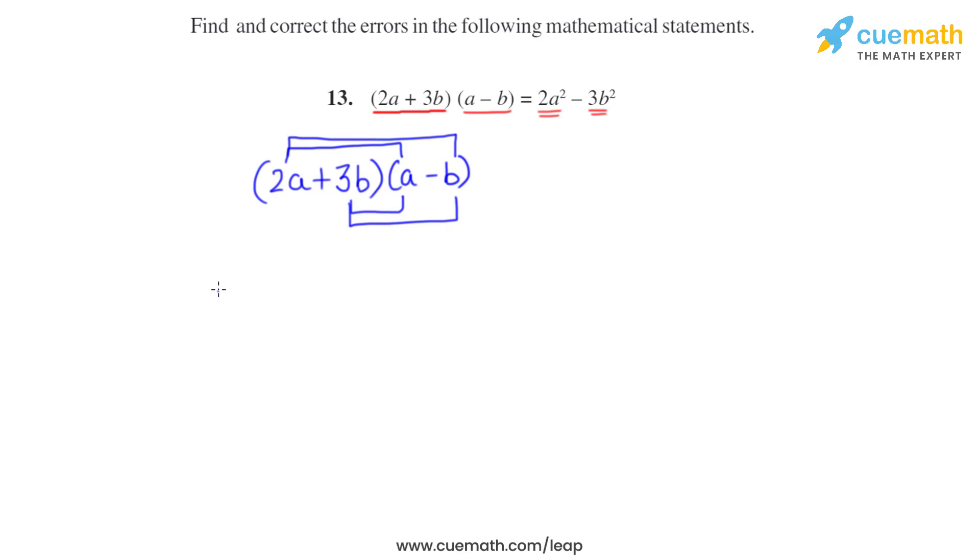So 2a into a is 2a², then 2a into minus b is minus 2ab. 3b into a is 3ab, and 3b into minus b is minus 3b². So this we get after multiplying.